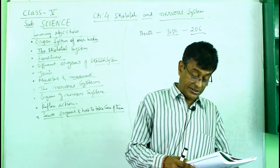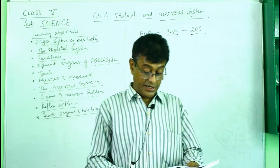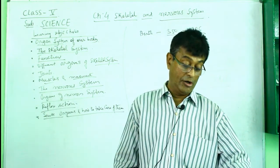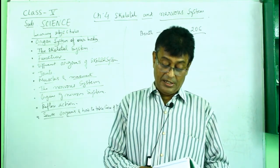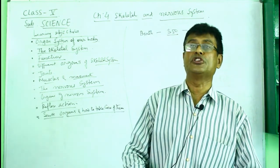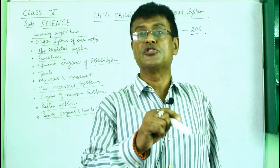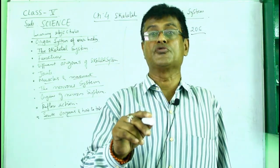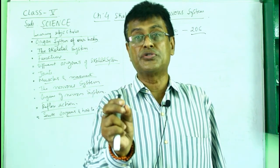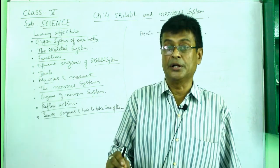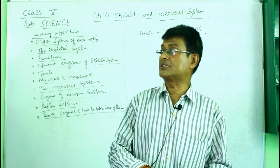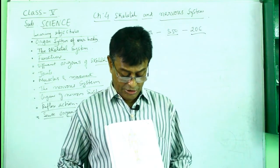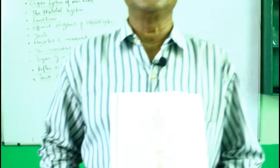Let us start with the skeletal system, and later we will start with the nervous system in detail. The skeletal system has 206 bones in adults. At birth there are 350 bones - in your book you will find 304 bones, but there are also some cartilages which fuse together to form bones. Look at the skeletal system picture and I will explain it point by point.